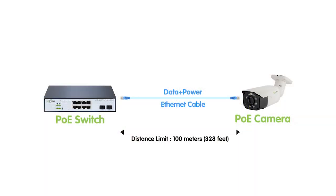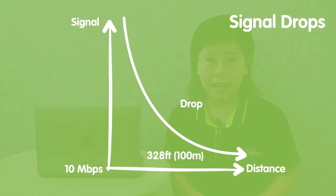The maximum distance is about 100 meters. As the cable length increases, the electrical resistance of the cable can cause a drop in voltage, leading to potential power delivery issues. Data signal can degrade, resulting in reduced network performance. So to extend the PoE reach beyond the standard distance limitation, a PoE extender tool can be used.